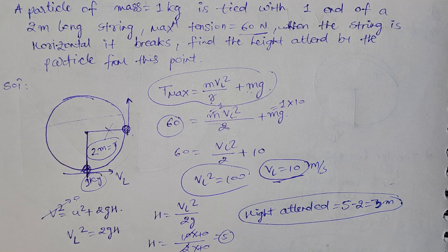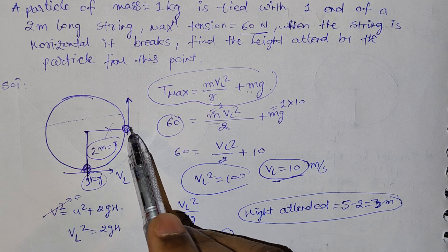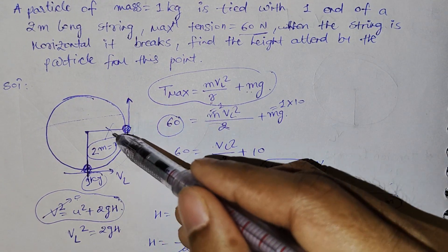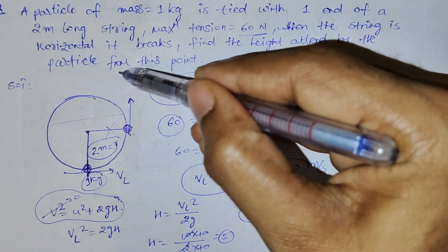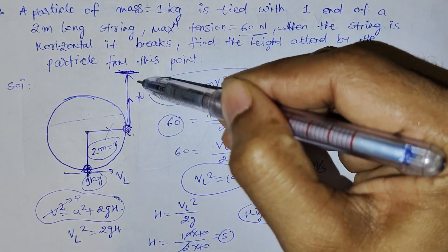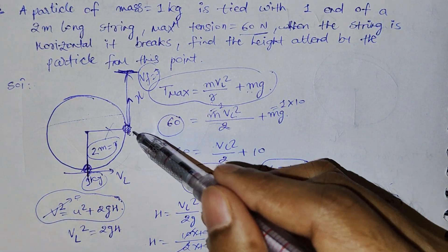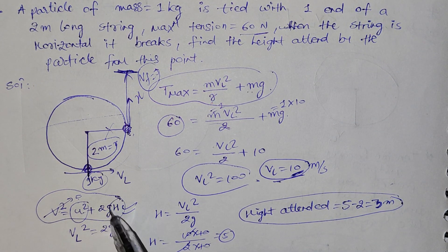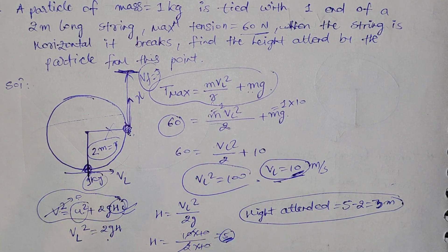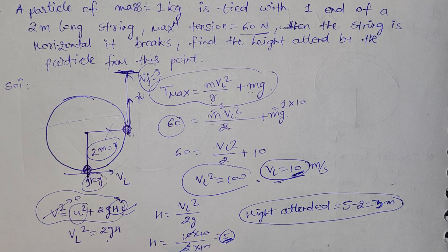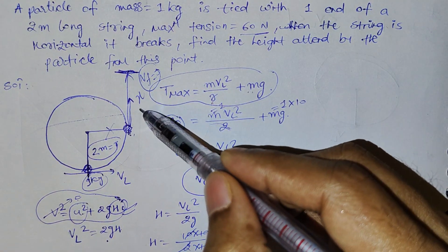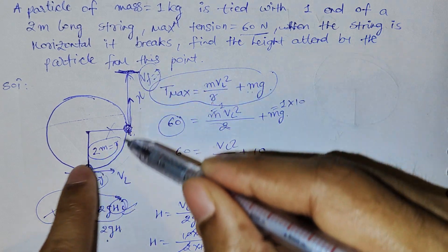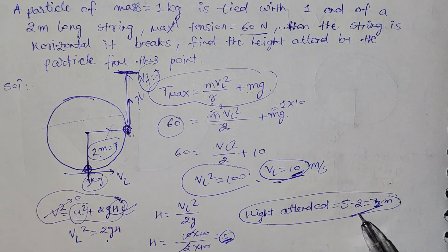After the string breaks, the particle flies as a projectile. Using the third equation of motion with final velocity = 0, initial velocity = 10 m/s, we get height = 5 meters from that point. Since the break point is 2 meters above the lowest point, the particle goes 5 - 2 = 3 meters above the lowest point.